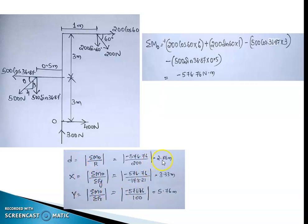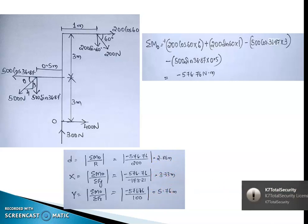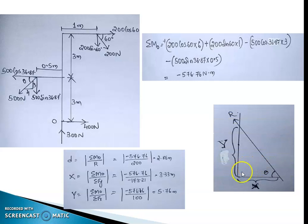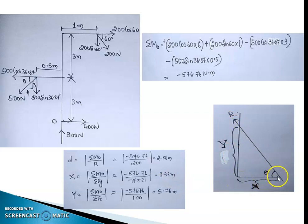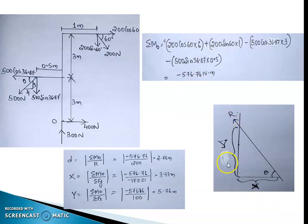The entire moment works out to be minus 576.76 newton-meters. Then calculate dx and dy based on the formulas — they work out to be 2.88 meters and 3.33 meters respectively, and 5.76 meters overall. Drawing from point O: the x-distance is 3.33 meters; joining the x and y intercepts gives the resultant, at angle theta. The resultant acts upward because the moment is negative, meaning with respect to this point the entire thing rotates in the anti-clockwise direction. That's all, thank you.